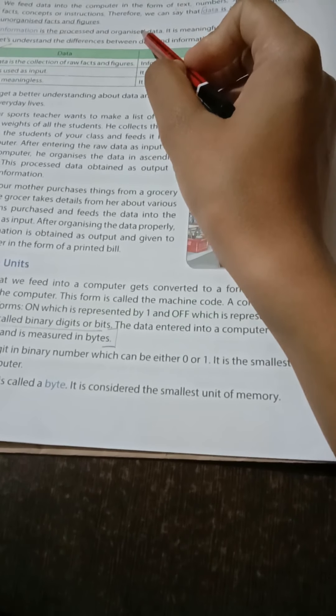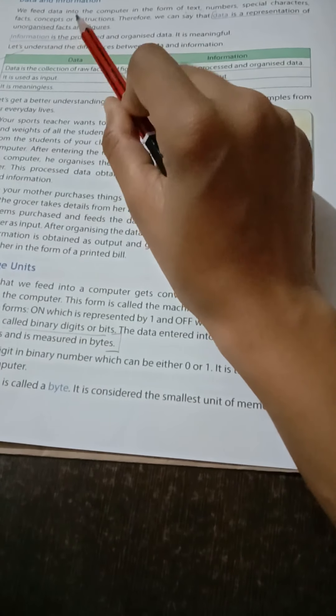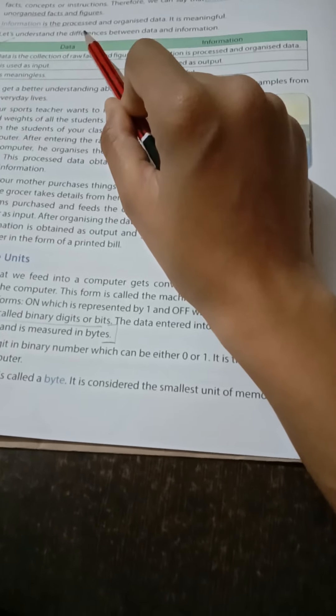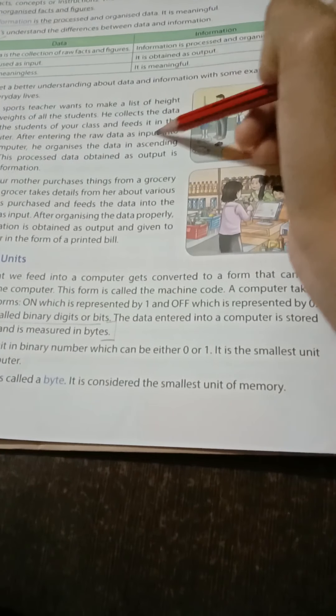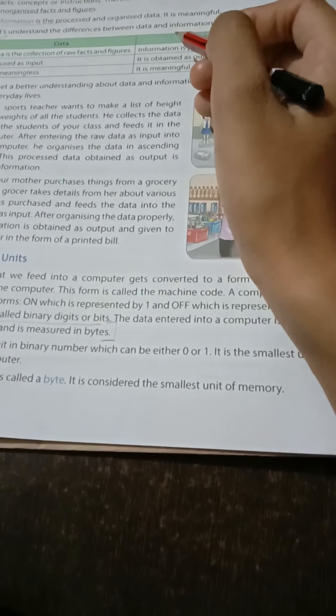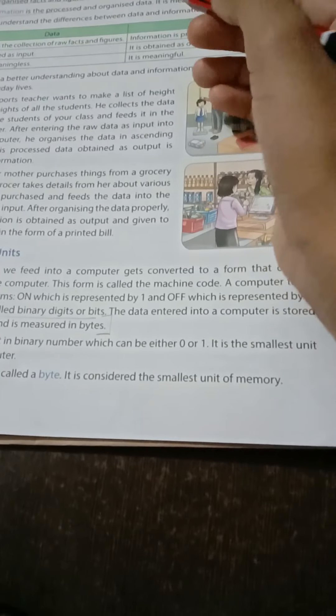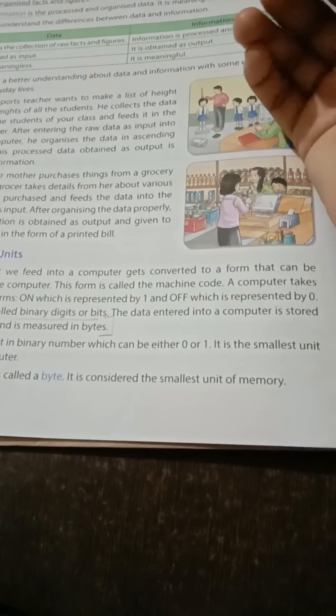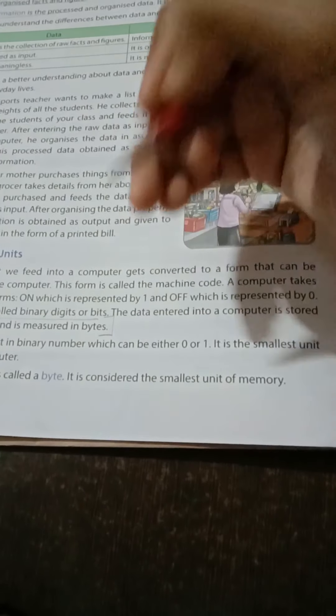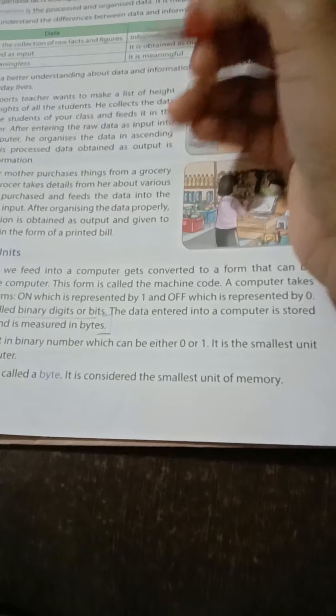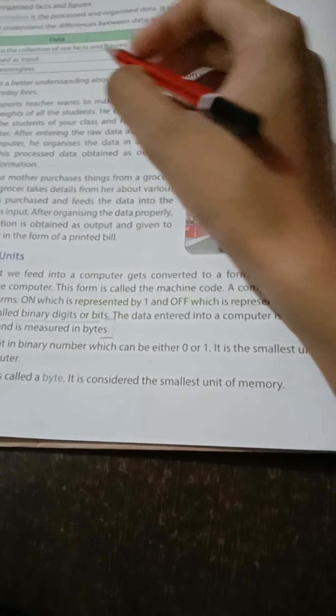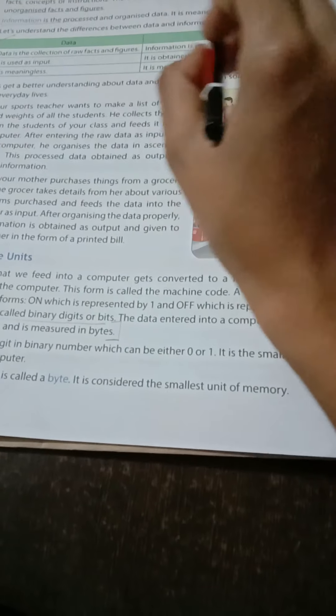Therefore, we can say that data is a representation of unorganized facts and figures. Data kya hai? Ek tarah ka information hai. Organized nahi hota hai. Why is it not organized? Because jo bhi hum data collect karte hai, randomly collect karte hai. That is why it is not in organized facts and figures — also known as unorganized facts and figures.